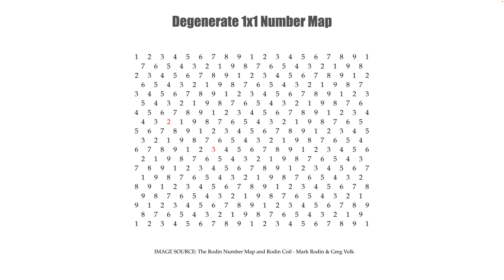So first, as a simple starting point, we can form a degenerate one-by-one Rodin number map like so. This is directly from this paper. We refer to this as a degenerate Rodin number map because it doesn't contain the symmetry and geometrically aligned patterns present in VBM. However, it serves as a starting point from which we can derive our non-degenerate Rodin number maps.